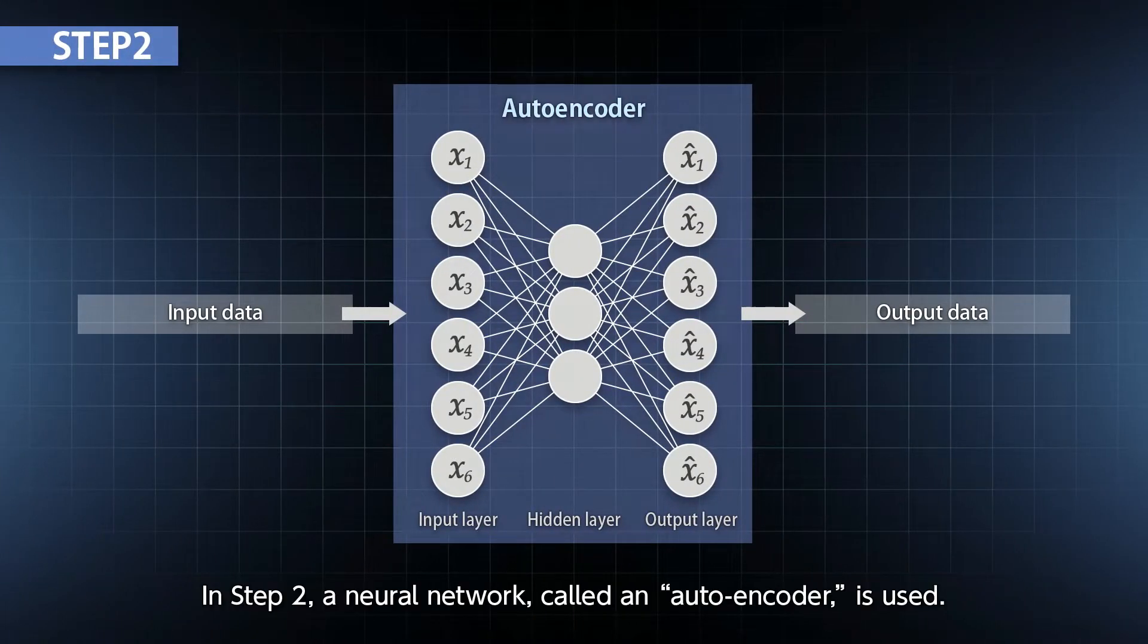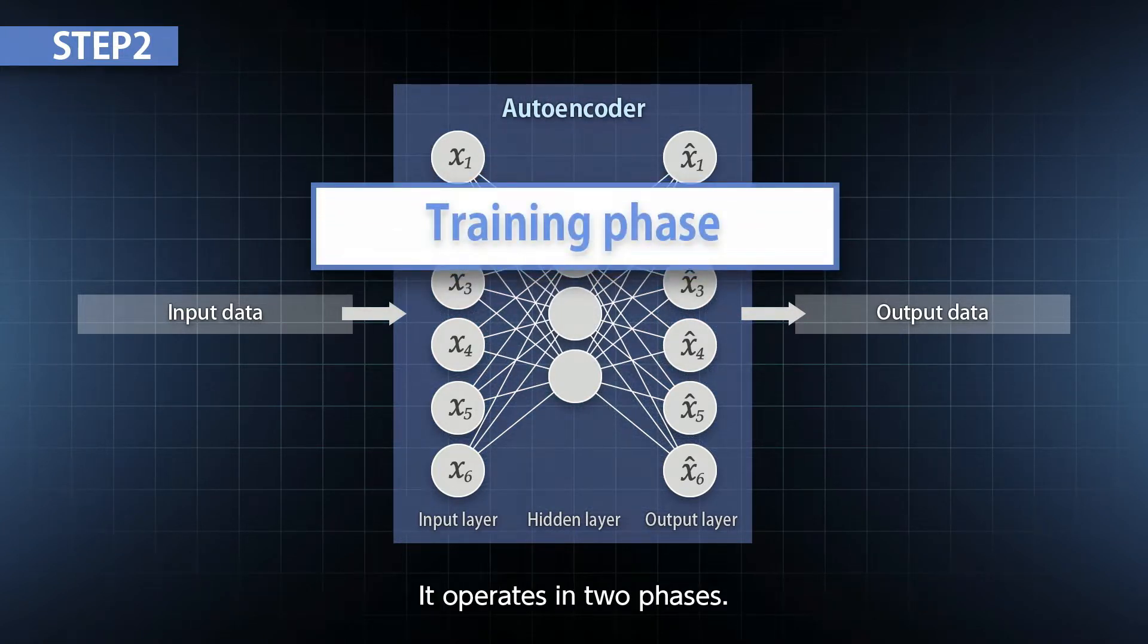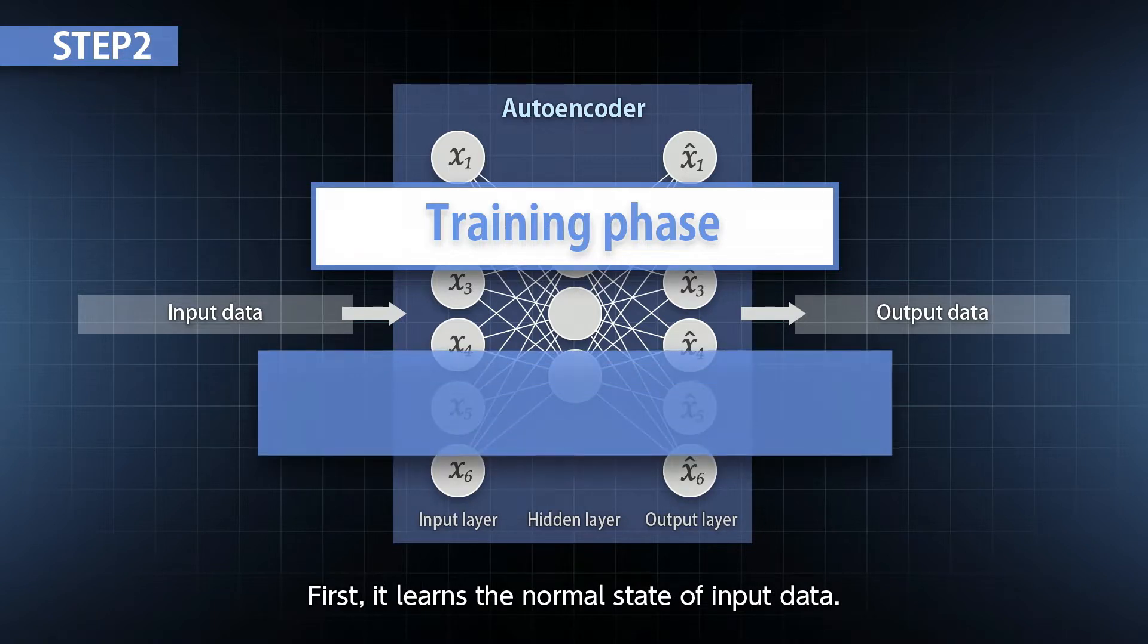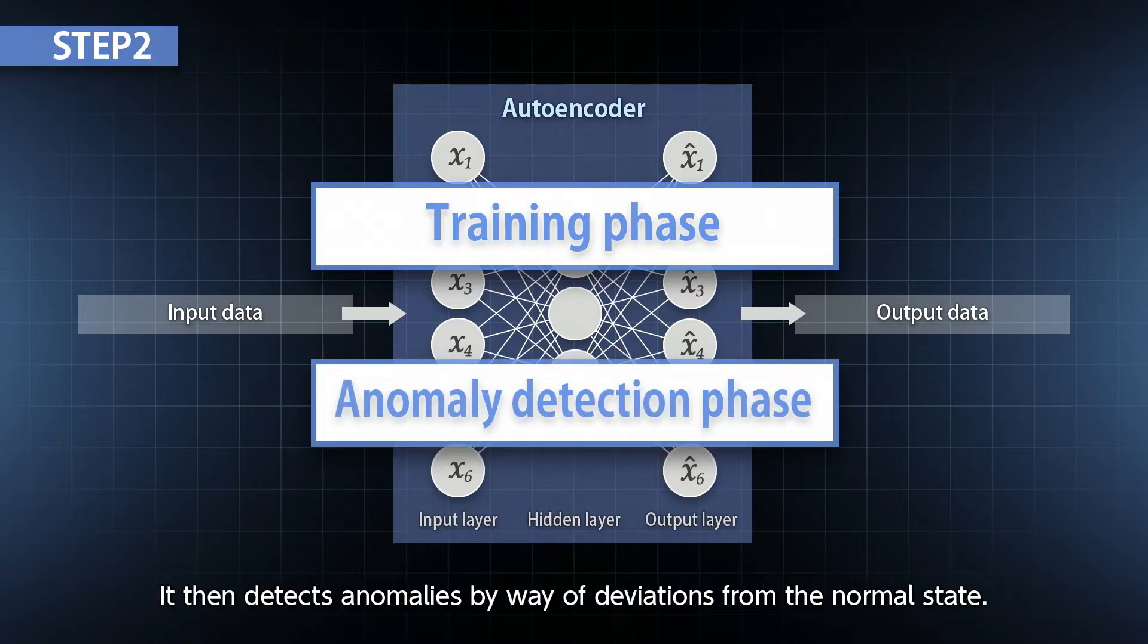In step two, a neural network called an autoencoder is used. It operates in two phases. First, it learns the normal state of input data. It then detects anomalies by way of deviations from the normal state.